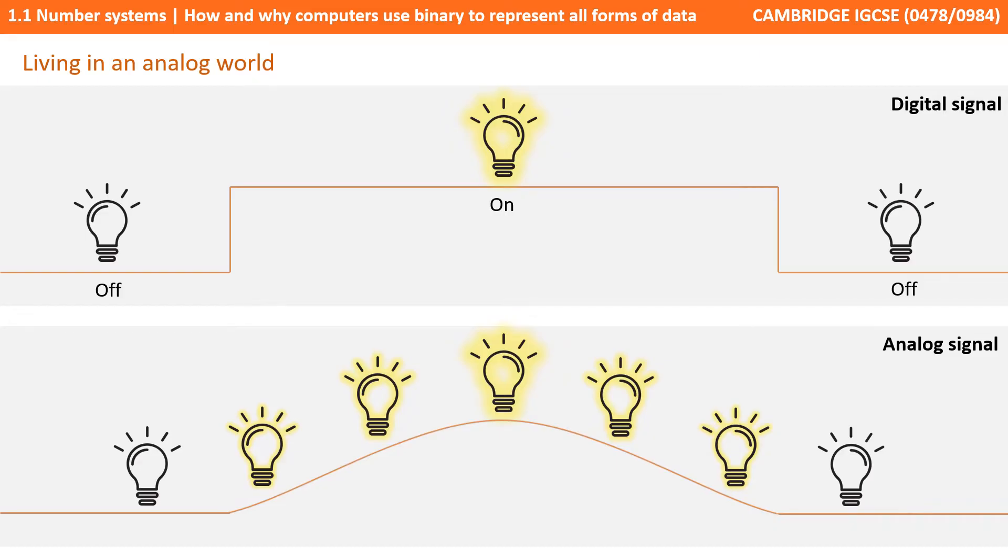Digital systems, such as computing devices, don't operate like this. In our digital representation this light exists in one of two binary states, either on or off, and it switches instantly between them as shown here.